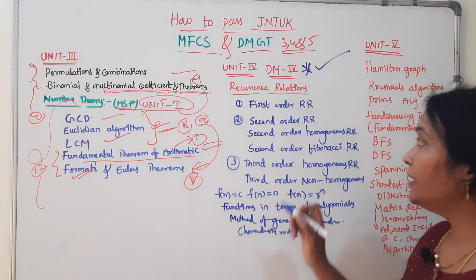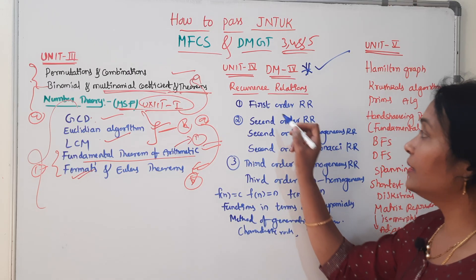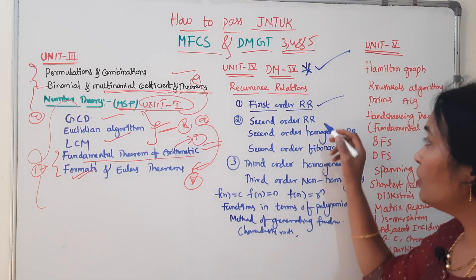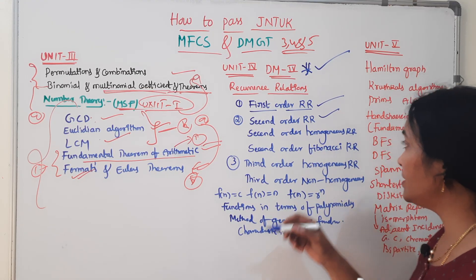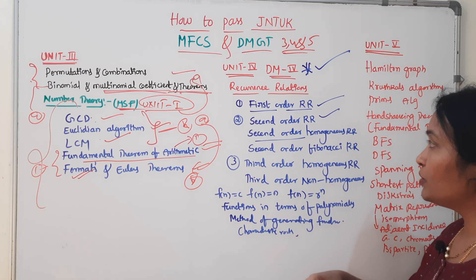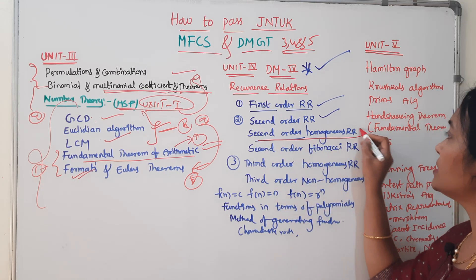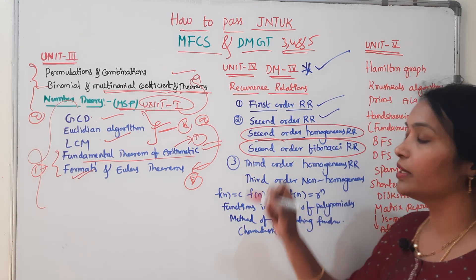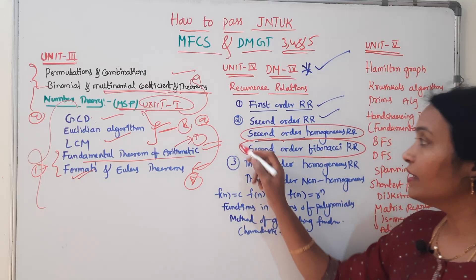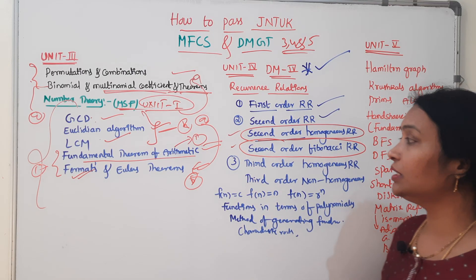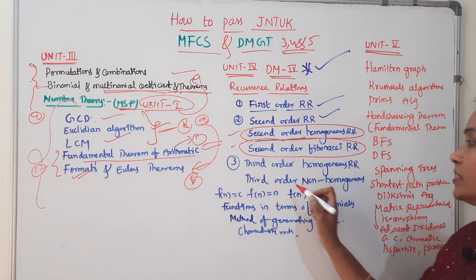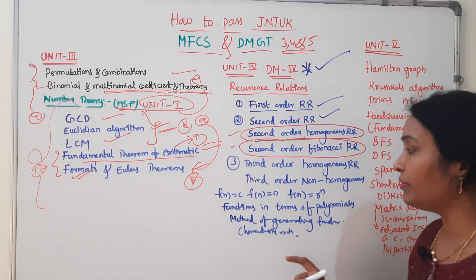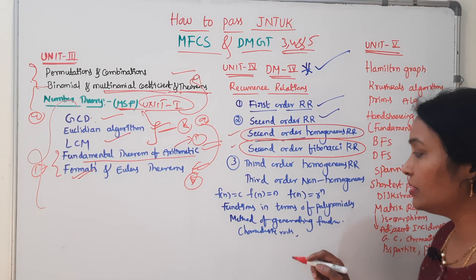No doubt at all. What is recurrence relation? First order recurrence relation — done with the problems. Second order recurrence relation — done with the problems. Third order recurrence relation — there are many repeated questions. This uses the method of generating functions and characteristic roots.